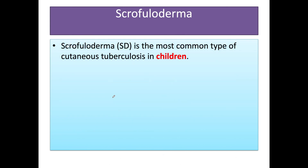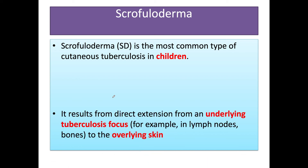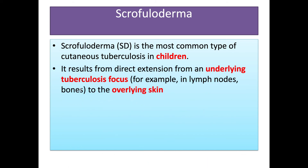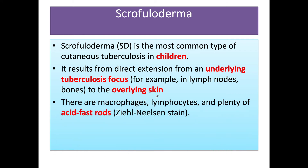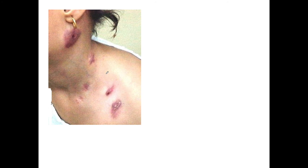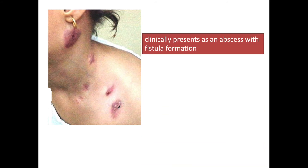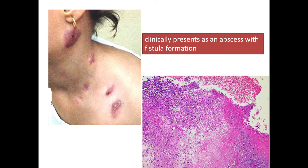The third entity is scrofuloderma. This is the most common type of cutaneous tuberculosis in children. It results from direct extension from an underlying tuberculosis focus — for example, in lymph nodes, bones, or lungs — to the overlying skin. Macrophages, lymphocytes, and plenty of acid-fast rods are seen under the microscope using ZN stain. Clinically the patient presents with multiple abscesses with discharging sinuses or fistulae. Microscopically we see ulceration of the overlying epidermis with caseating necrosis in the dermis along with abscess formation.